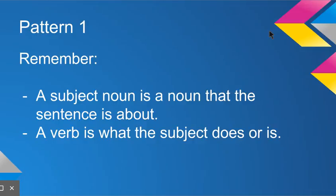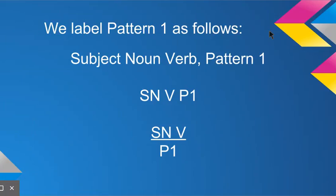Remember, both have to be there in order for it to be a sentence. We label Pattern 1 as follows: subject noun, verb, Pattern 1—SN V P1. We put the SN and the V on top of the line and underneath we put P1 for the type of pattern. For the other patterns you're going to add on to that later.